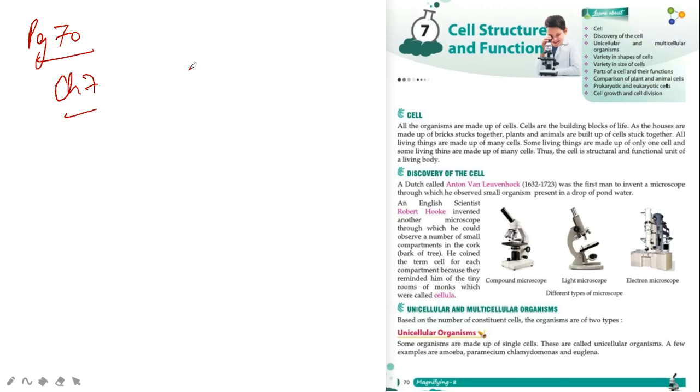Students, what is a cell? Our body first has cells. Cell se bane tissues, tissue se body mein bana organ, organ se bana organ system, and organ system se finally we are made, that is organism.